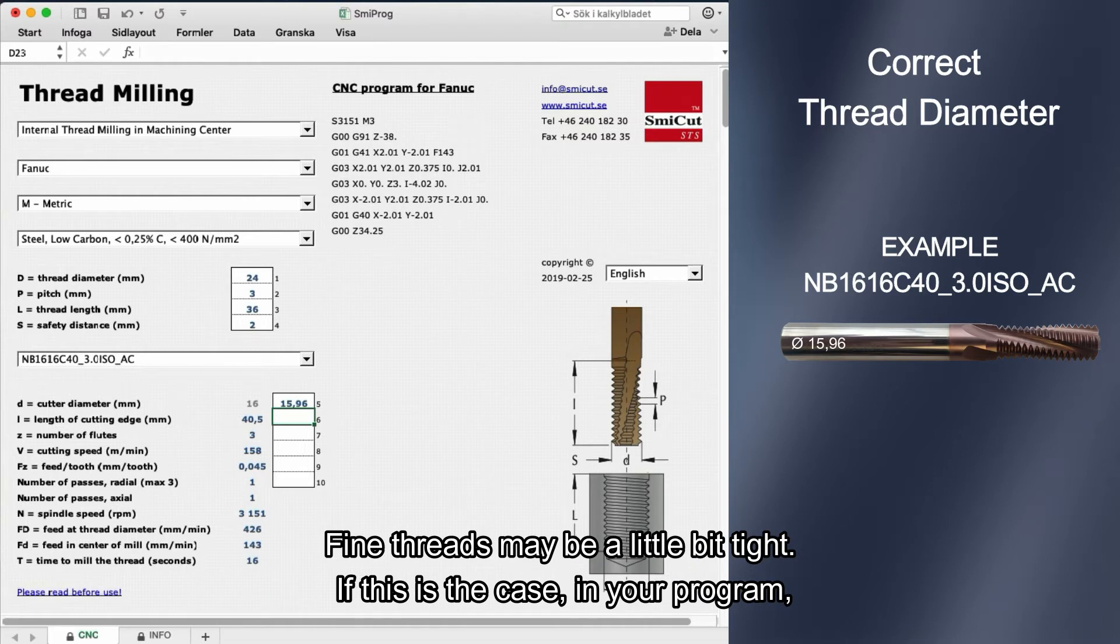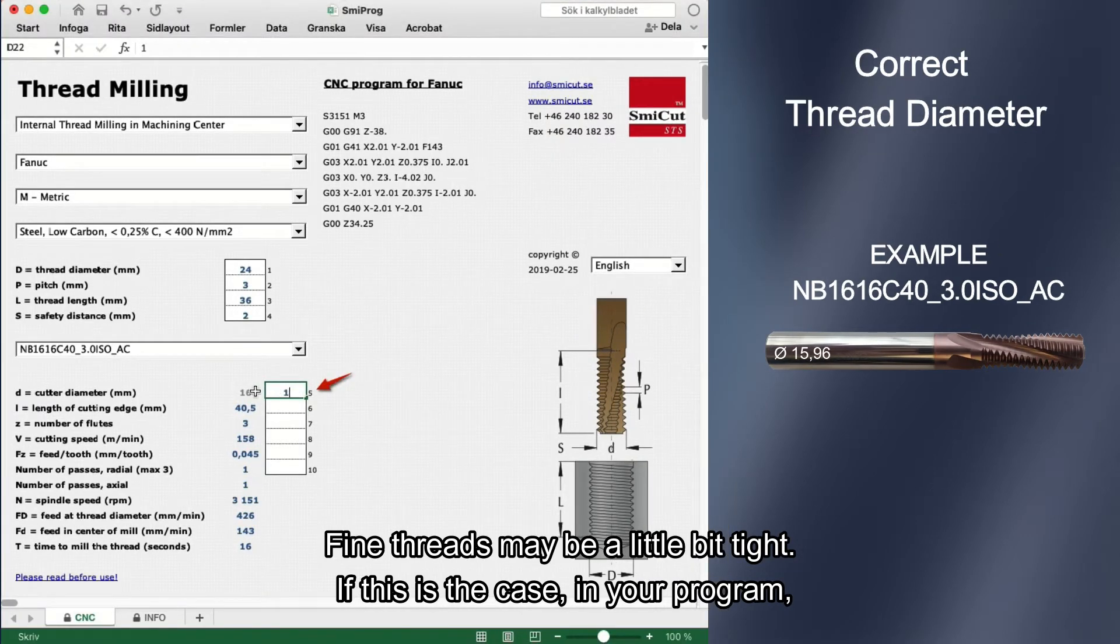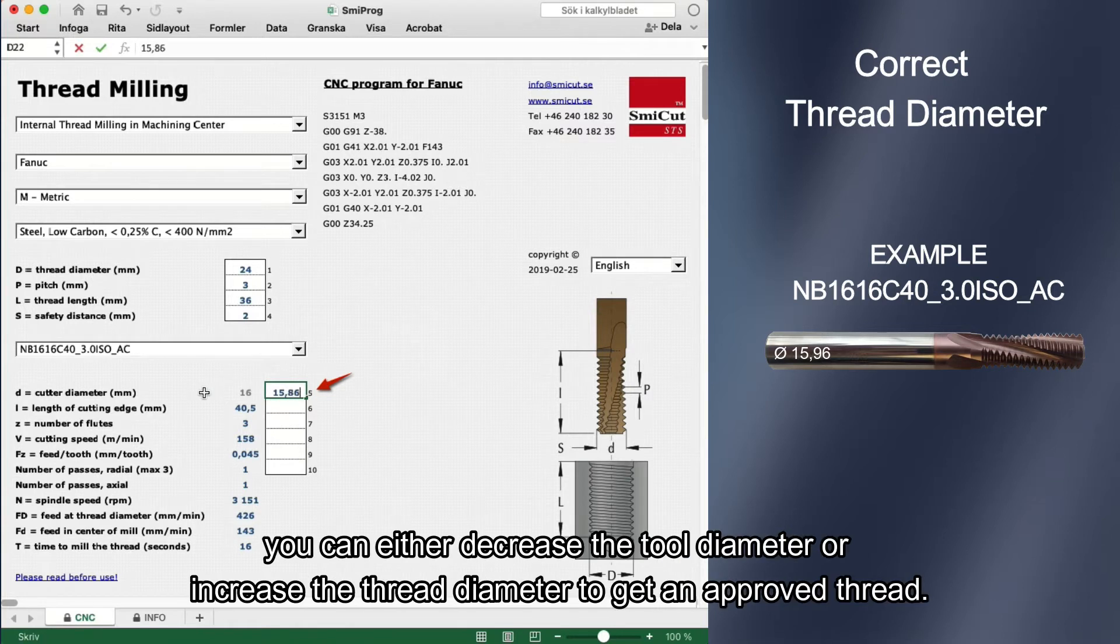Fine threads may be a little bit tight. If this is the case, in your program you can either decrease the tool diameter, or increase the thread diameter to get an approved thread.